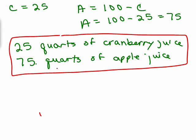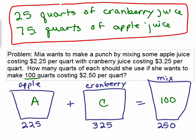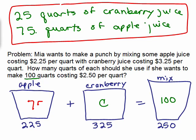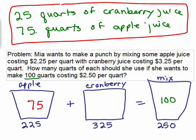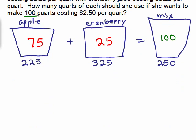The last thing we want to do is see if this makes sense from our original problem. Remember A was the amount of apple juice — now we know A is 75 quarts of apple juice, and C was 25 quarts of cranberry juice, and we still have 100 in the mix. So that makes sense: 75 plus 25 equals 100. Let's see if the cost analysis checks out as well.